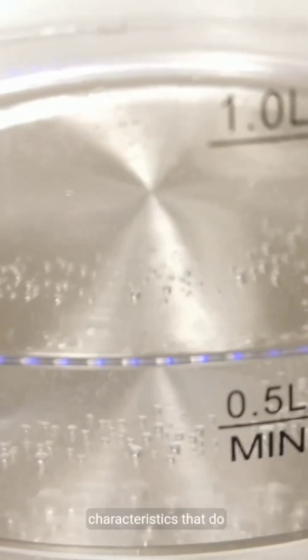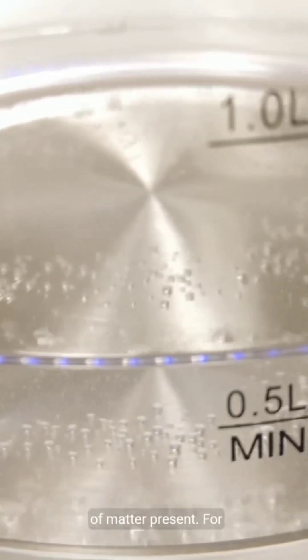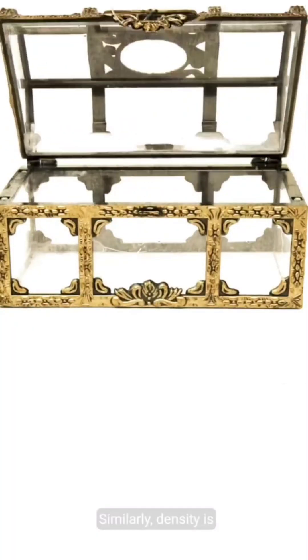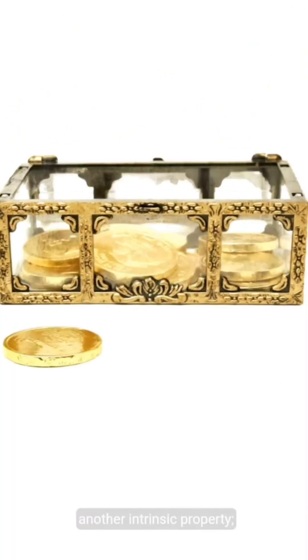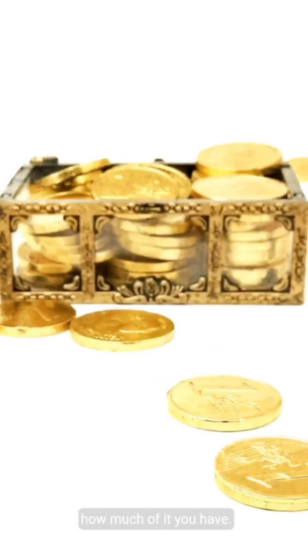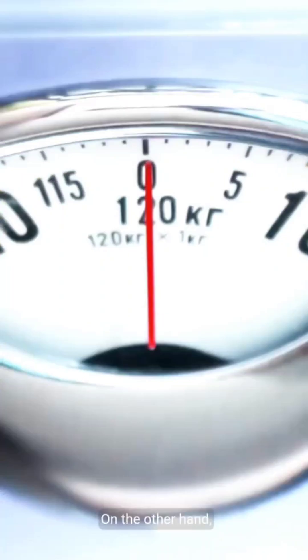Intrinsic properties are characteristics that do not depend on the amount of matter present. For instance, the boiling point of water is 100 degrees Celsius. Similarly, density is another intrinsic property. Gold will always have the same density, no matter how much of it you have.